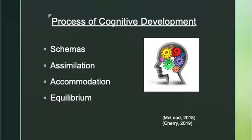Equilibrium is a balance children try to achieve between assimilation and accommodation. As children progress through the stages of cognitive development, it is important to maintain a balance between applying previous knowledge and changing behavior to account for new knowledge. Equilibrium helps explain how children can move from one stage of thought to the next.